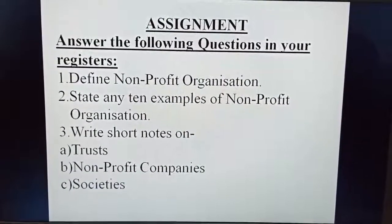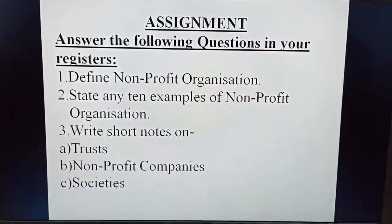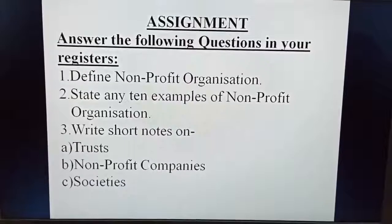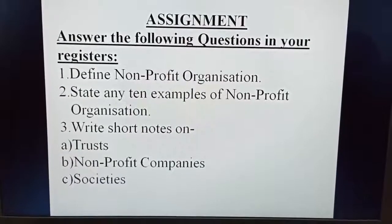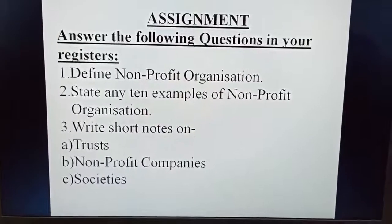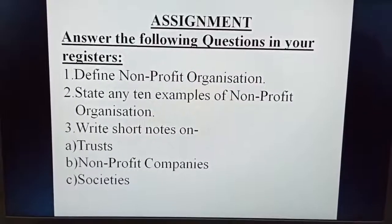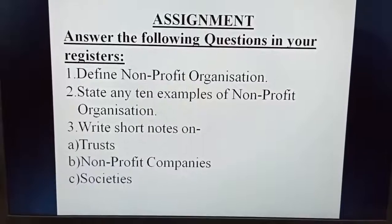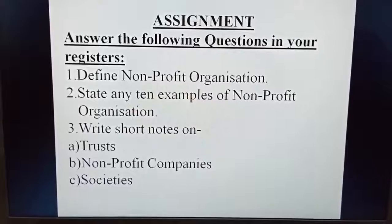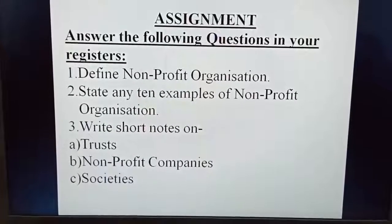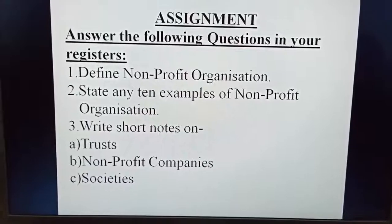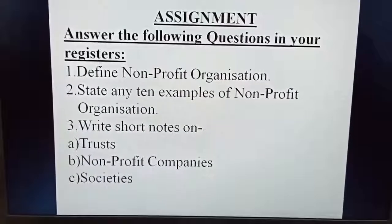The third short note topic is Societies. A society is a group of 10 or more persons who come together voluntarily and form a society. They get themselves registered under the Cooperative Societies Act 1912 and work with the motive of promoting their common interest and not for profit. For example, the producer of Amul brand milk product is working as a society.